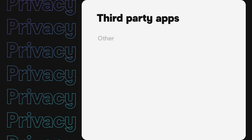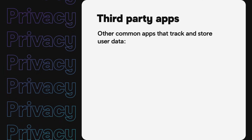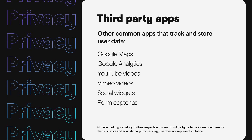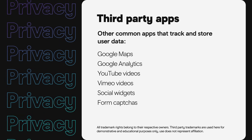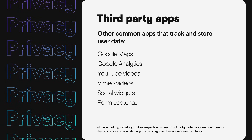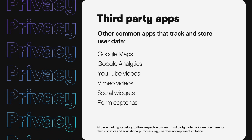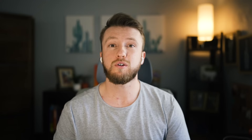Other interactive third-party apps that are common and also track and store user data include Google Maps, Google Analytics, YouTube, and Vimeo videos. These functions may be required, but it is worth noting when discussing user data and user trust. Installing social widgets invites those third parties to see and track user data, the same with many form captures. Even form captures used to verify if someone is human can track and store user data.